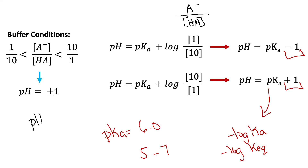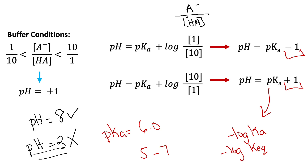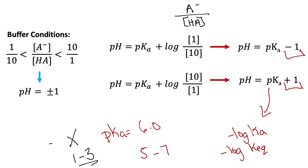It is important to choose the correct buffer to maintain your pH. If we have a solution with a pH of 8 but choose a buffer with a pKa of 2, that buffer has a working range of 1 to 3 and would not be able to maintain the pH of 8. Outside of this range, products and reactants cannot neutralize one another and the pH would drastically change. So always choose a buffer whose pKa is within ± 1 of the solution's pH.